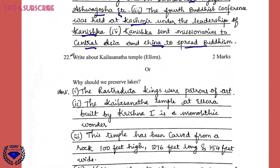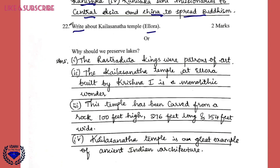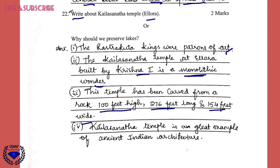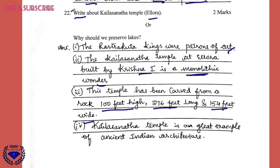Question 22: Write about the Kailashanatha temple at Ellora, for two marks. First, the Rashtrakuta kings were patrons of art. Second, the Kailashanatha temple at Ellora, built by Krishna I, is a monolithic wonder. Third, this temple has been carved from a rock one hundred feet high, two hundred and seventy-six feet long, and one hundred and fifty-four feet wide. Fourth, the Kailashanatha temple is a great example of ancient Indian architecture.